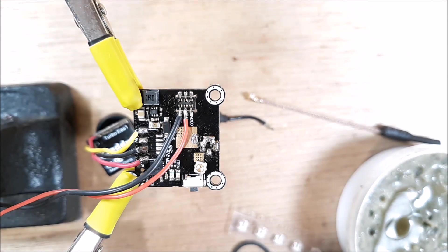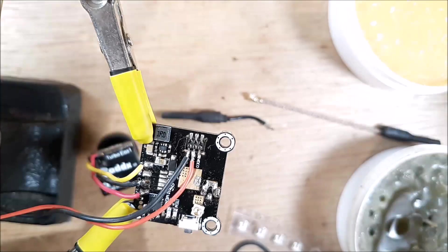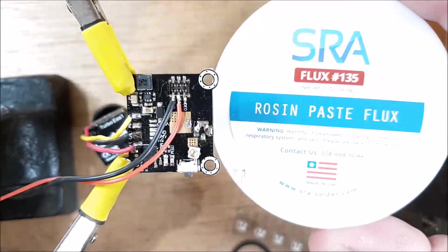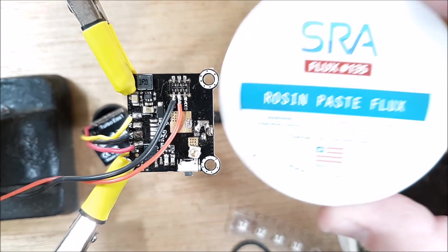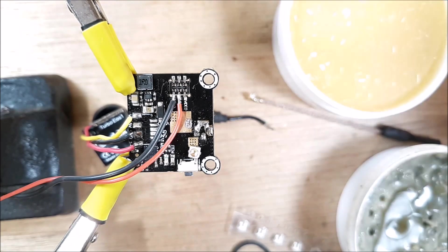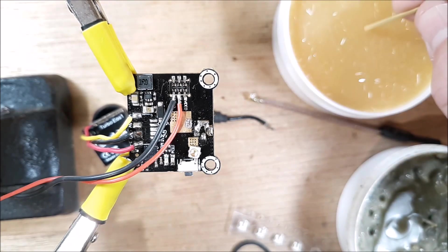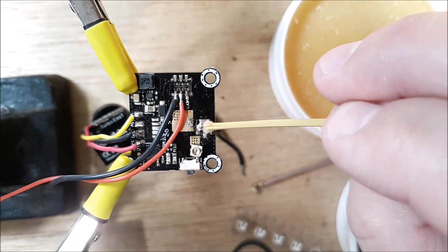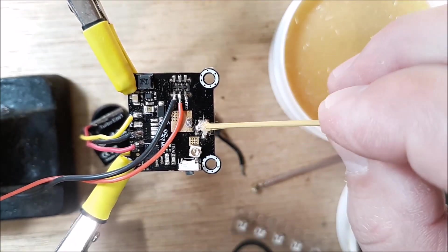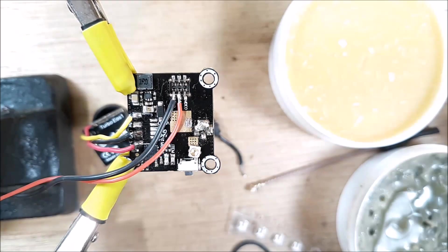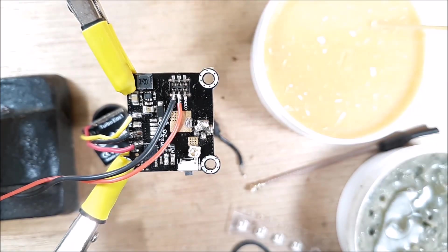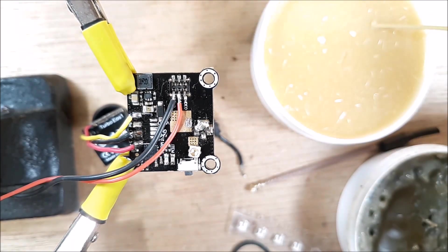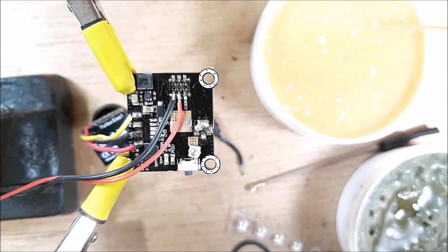And we're going to hit it with some flux paste. I've got some - this is what I'm using. We're just going to take a little bit of that, get in here. Doesn't take much. I'm running my soldering iron up to about 275 degrees Celsius.